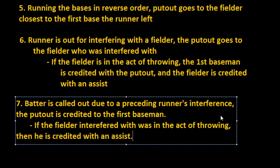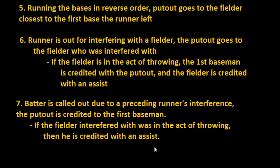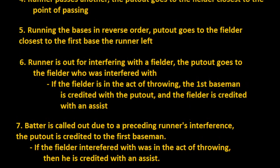This situation could arise if there is a runner on first base and there's a ground ball to the second baseman. Under the rules, the runner has to allow the fielder to make a play on that ball. If the umpire judges that the runner running from first to second base purposely interfered with the second baseman, the umpire would call the runner out and also call the batter out.